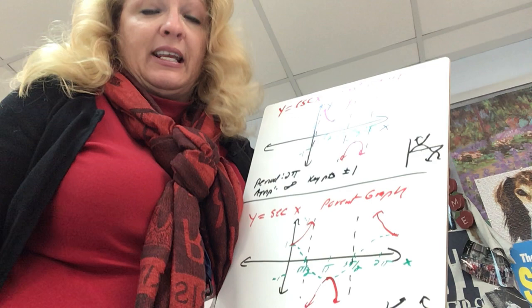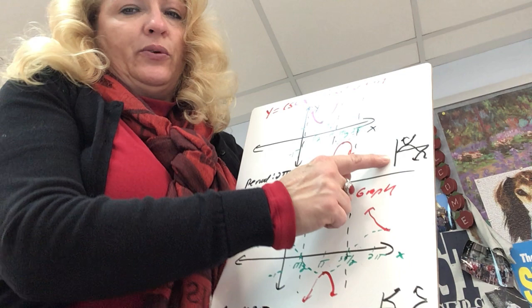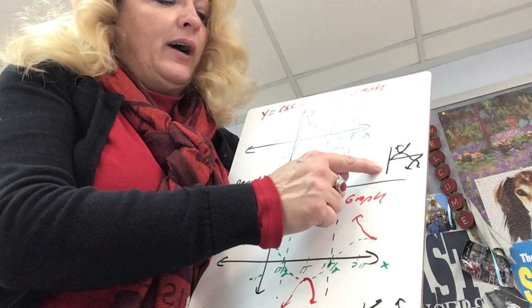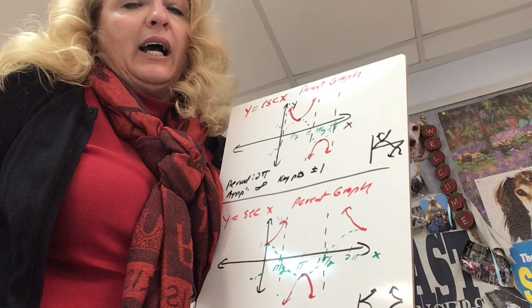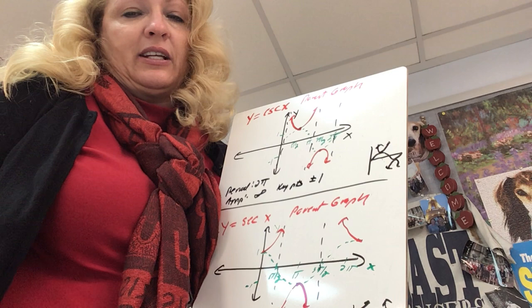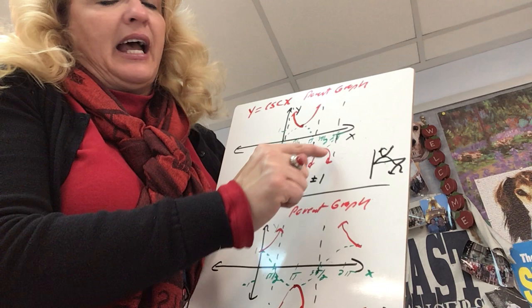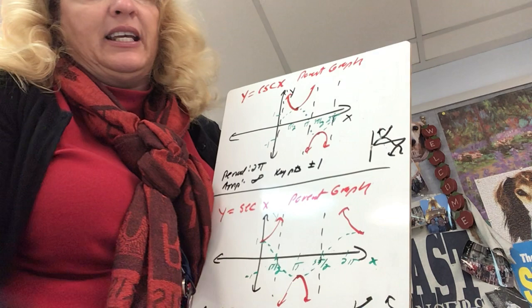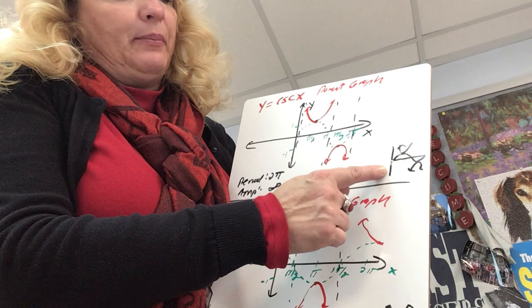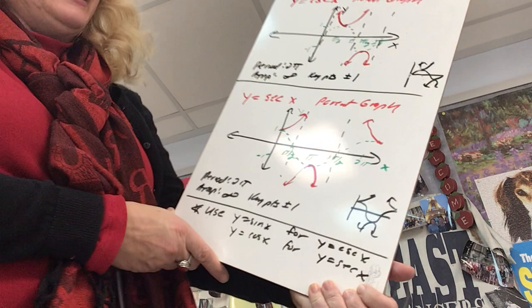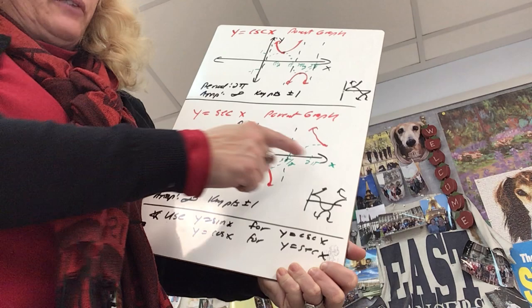Cosecant is undefined at zero, but another approach is to sketch sine first, since we know sine very well. In the first couple of days of the unit I had you graph functions and their reciprocals together to show the graphical relationship — they fit together for a reason. So when I go to graph cosecant, I graph sine first, and that sketch tells me I have an asymptote at the beginning, one at the end, and one in the middle.